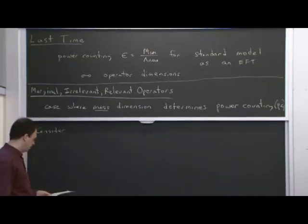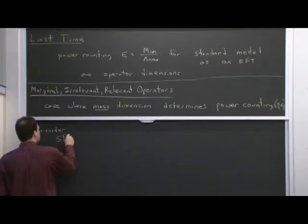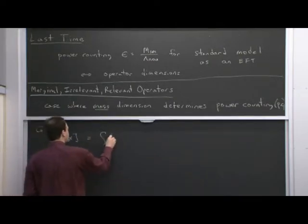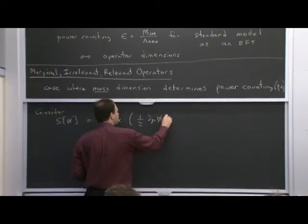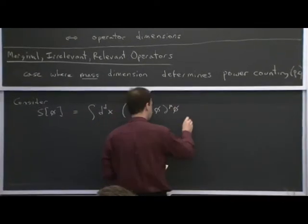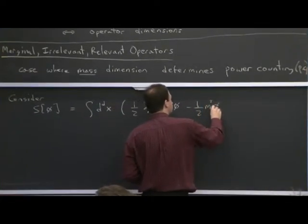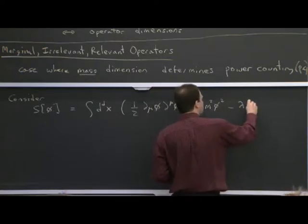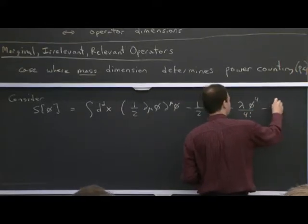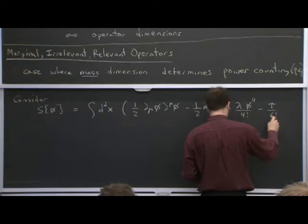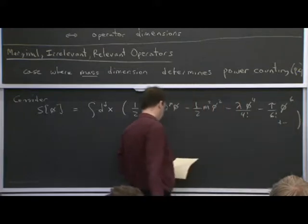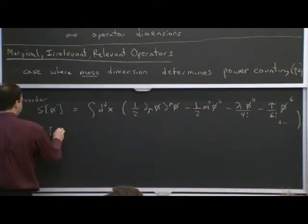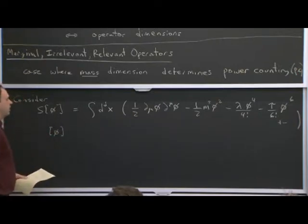Let's consider an effective field theory — a scalar effective field theory in d dimensions — with a standard kinetic term, mass term, and phi-4 term. So it'll be a phi-4 scalar field theory. It'll be an effective theory, so we won't stop there. I'll write down up to phi-6 so that in principle I could keep going. We can look at the dimensions of the various objects here.